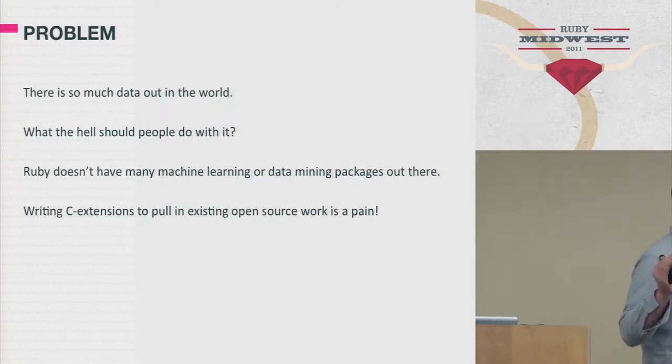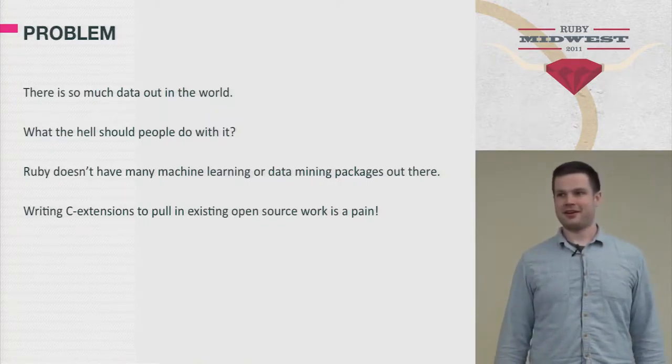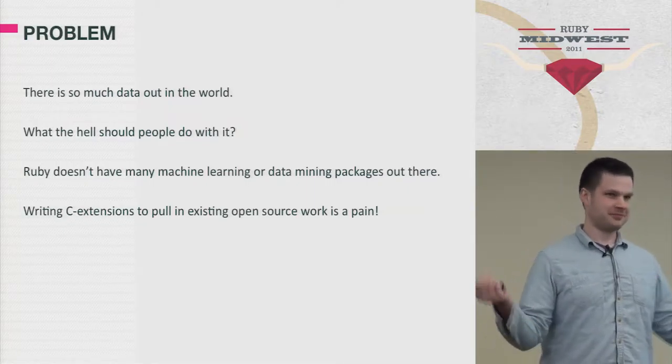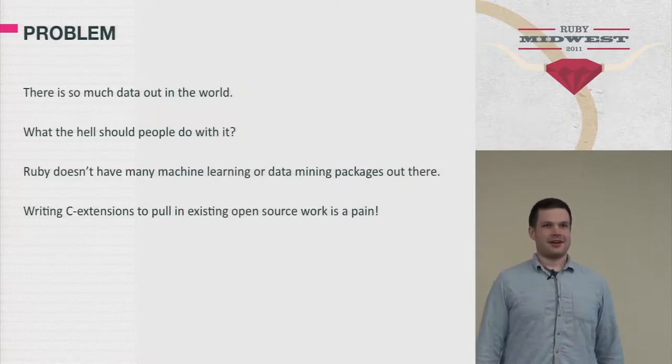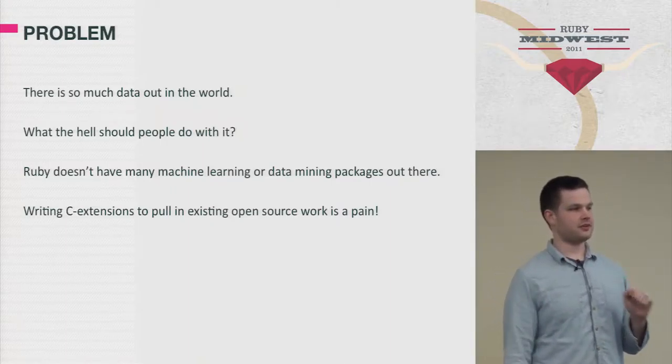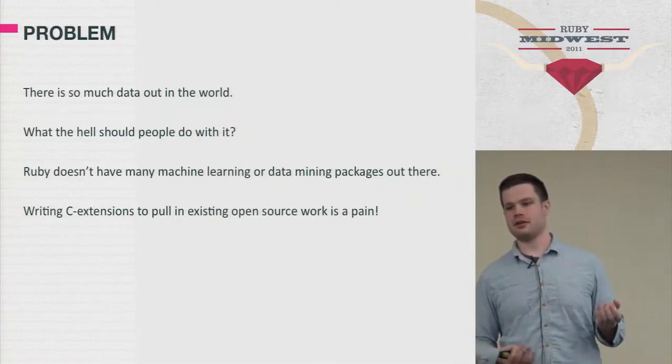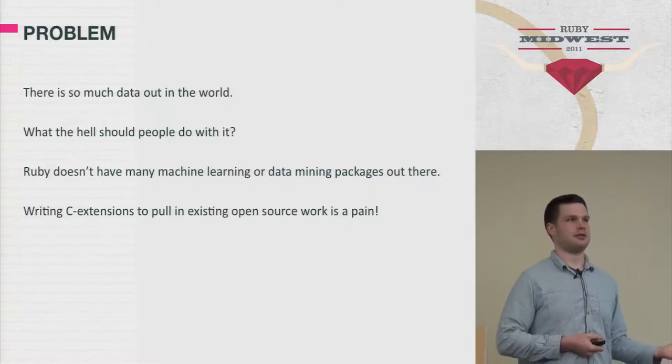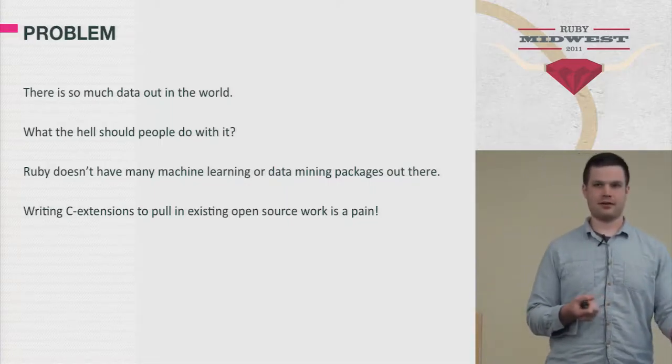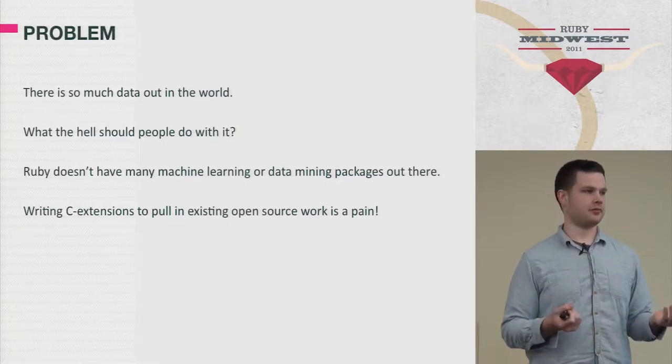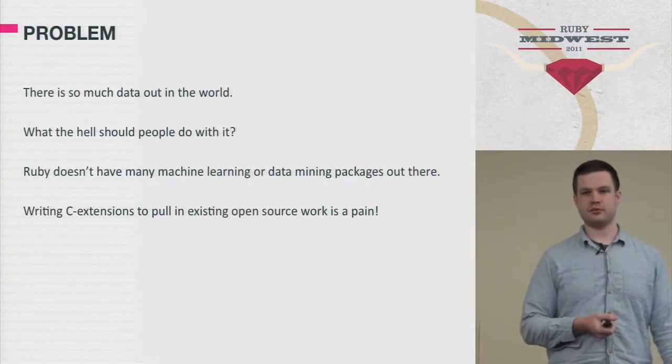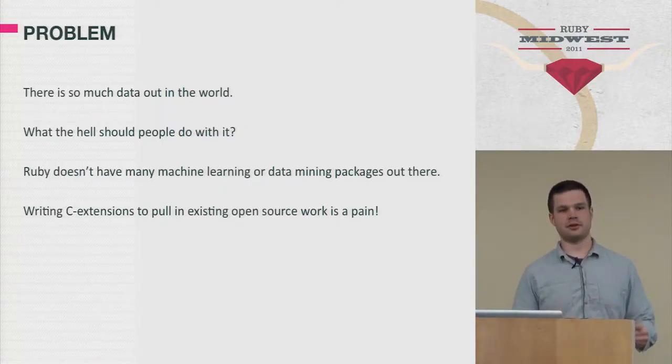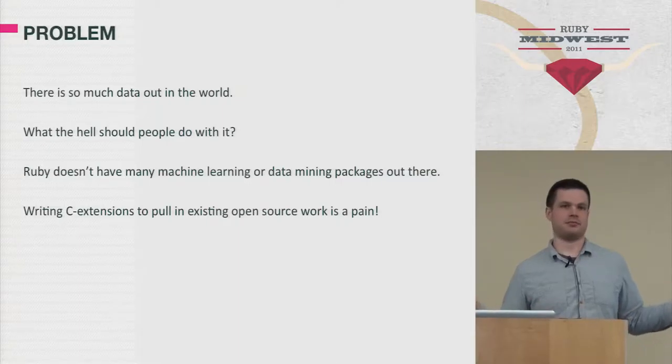People are always giving us information, whether it's a star rating, whether they like something, they dislike it. And really, as programmers, it should be up to us to figure out what to do with that and to bring it back to the user so that they have better recommendations. Ruby, unfortunately, there are a few statistics packages out there. There's a couple machine learning packages, but they're generally fairly old.